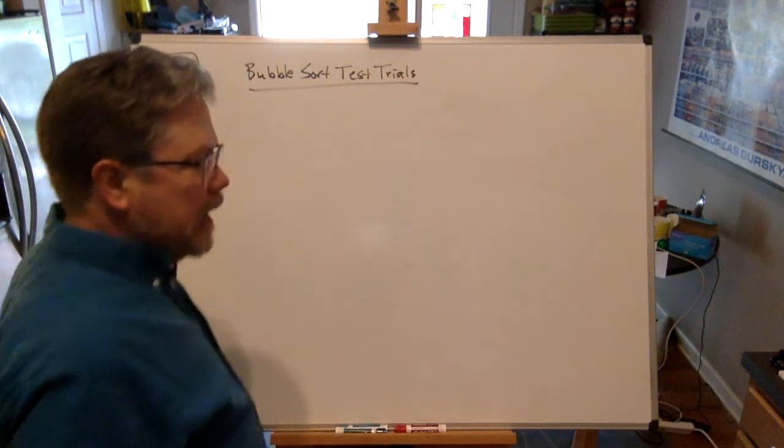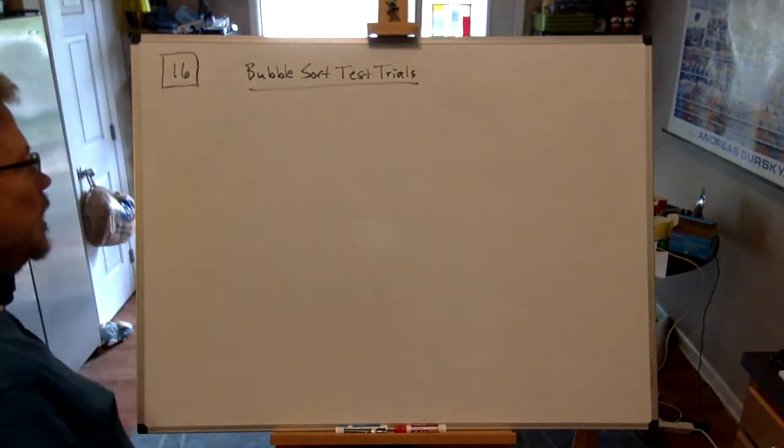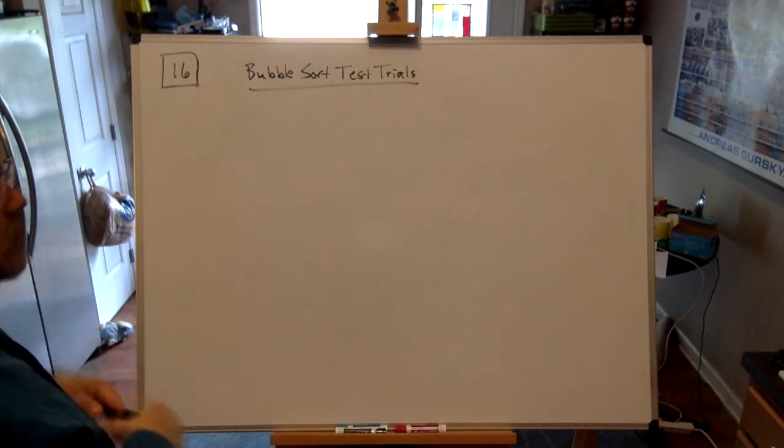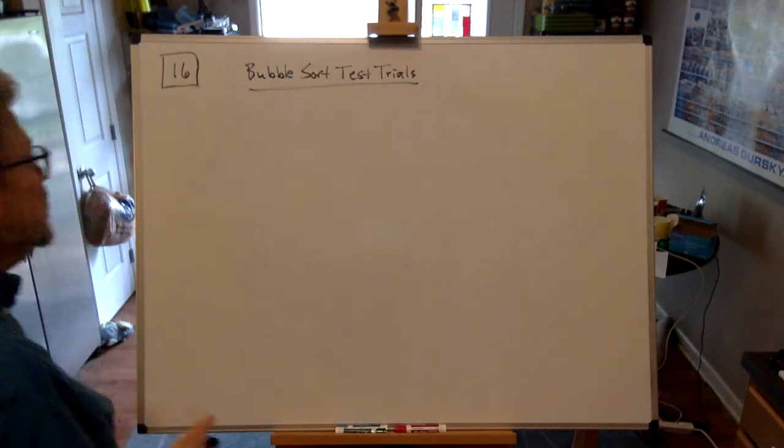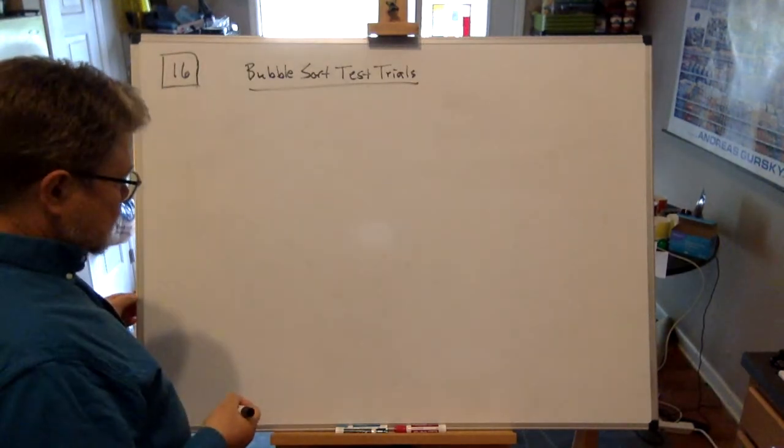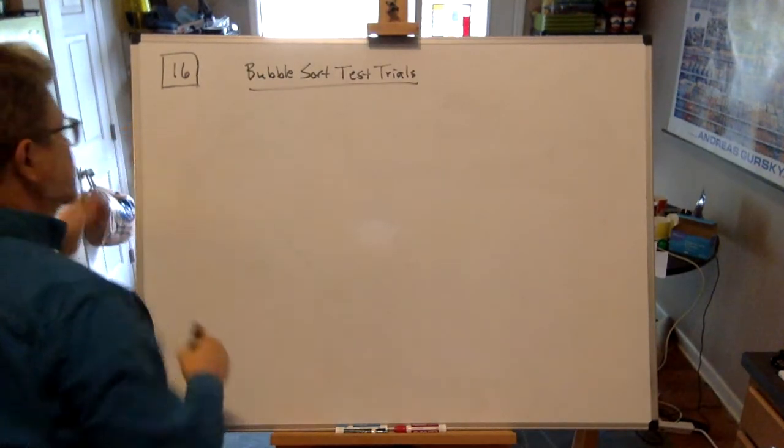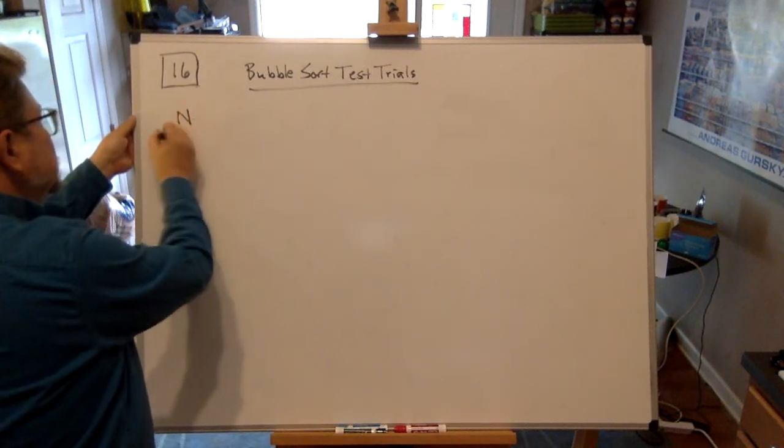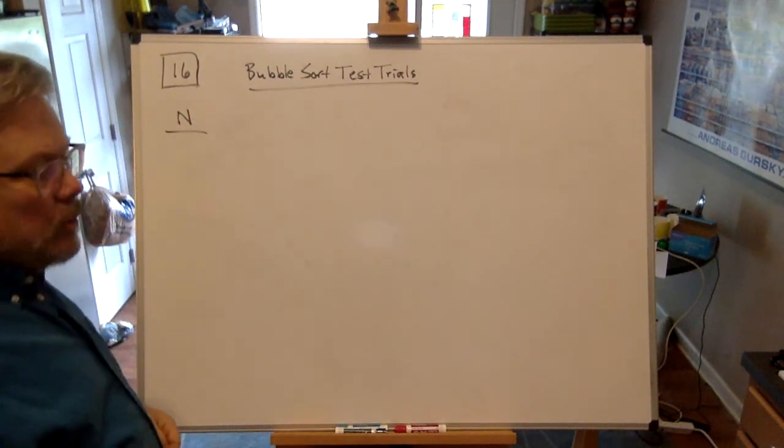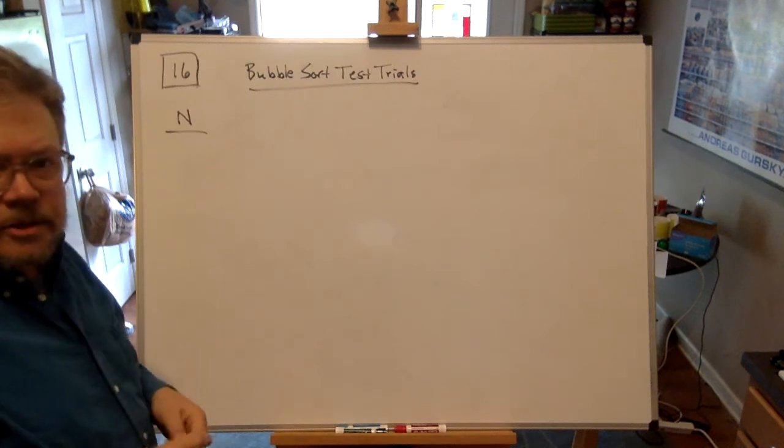These are our lab experimental results. To get lab experimental results, you've got to try it out on the machine with an algorithm implementation. This is going to take up the whole whiteboard. Over here I'm going to put capital N, which will be the list sizes that I try out.